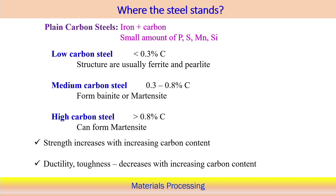Plain carbon steel is categorized into three types. Low carbon steel has carbon less than 0.3% and is used for structural applications; its microstructure consists of ferrite and pearlite. Medium carbon steel has 0.3–0.8% carbon and shows bainite or martensite or a combination of both in its microstructure. High carbon steel has more than 0.8% carbon and can easily form a martensitic structure.